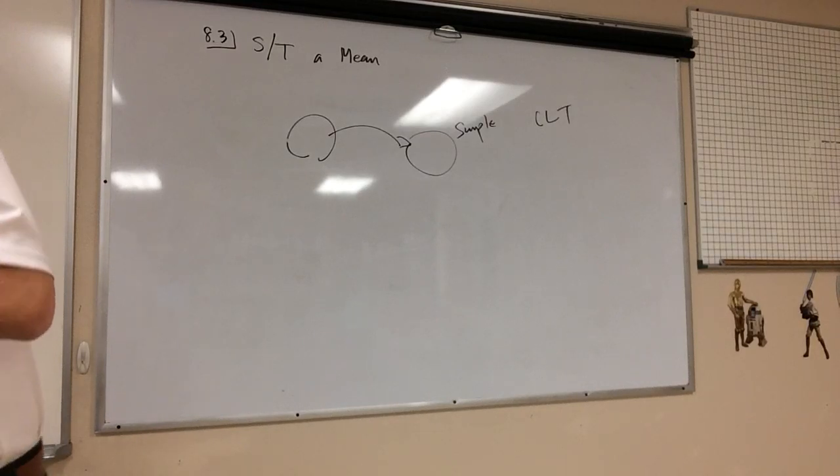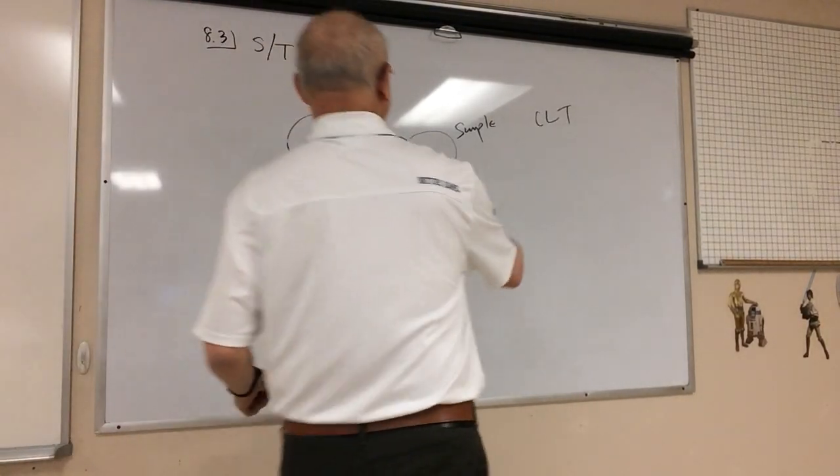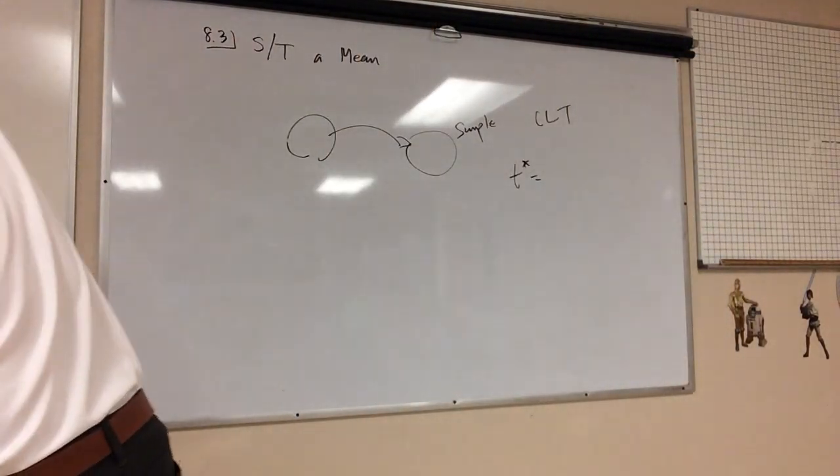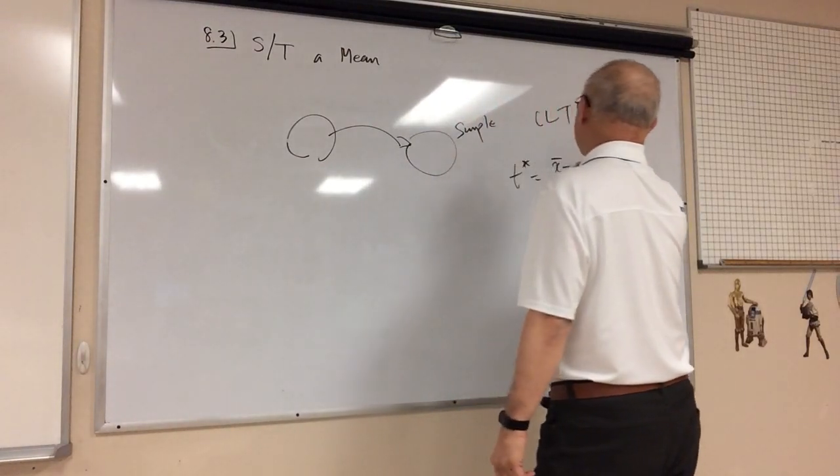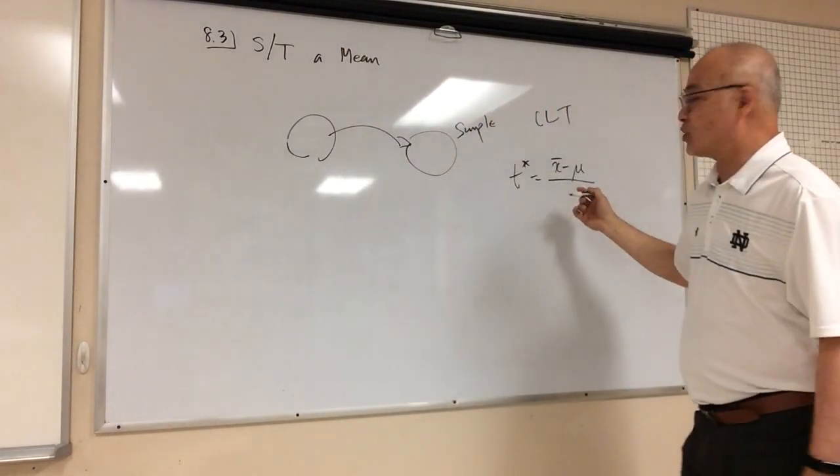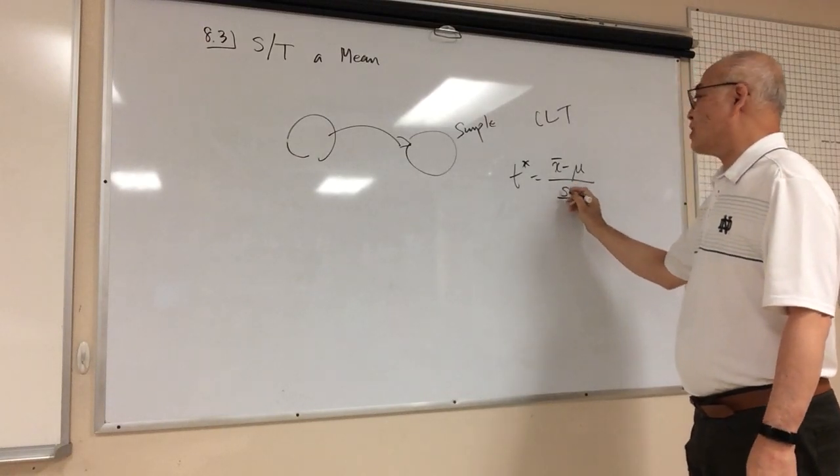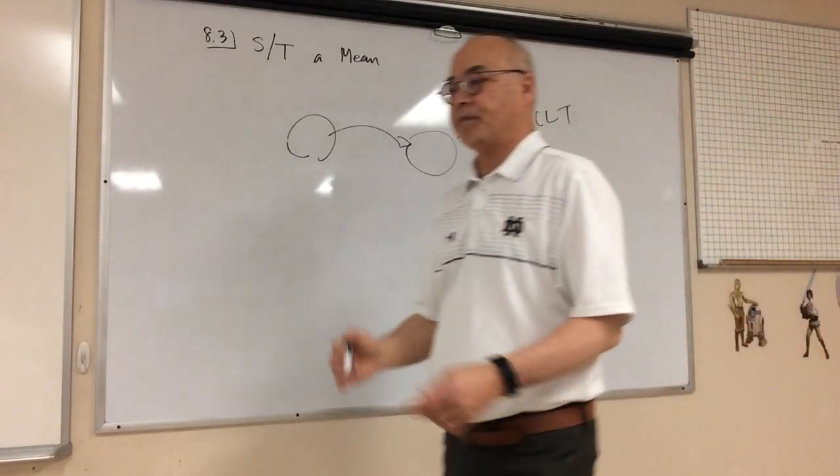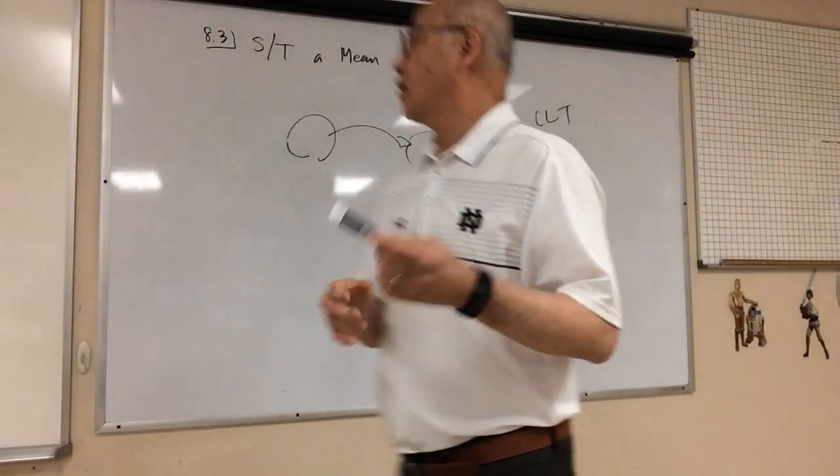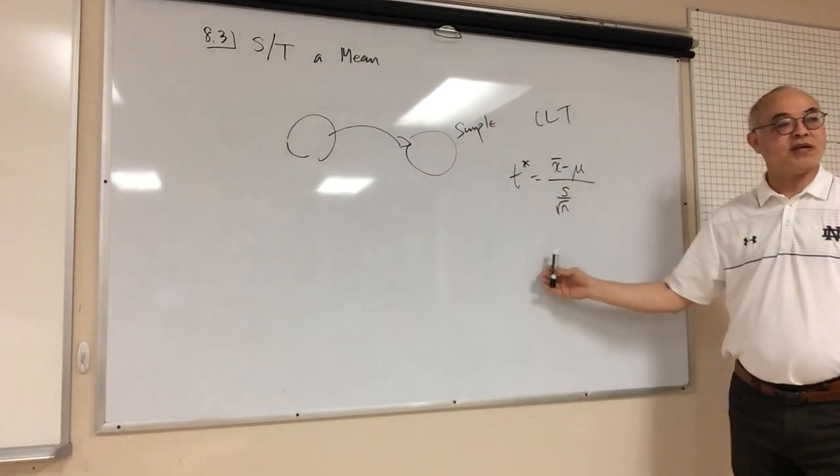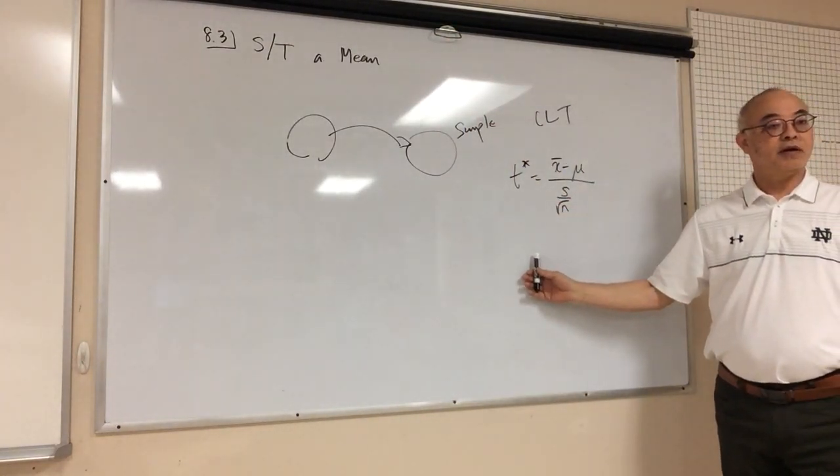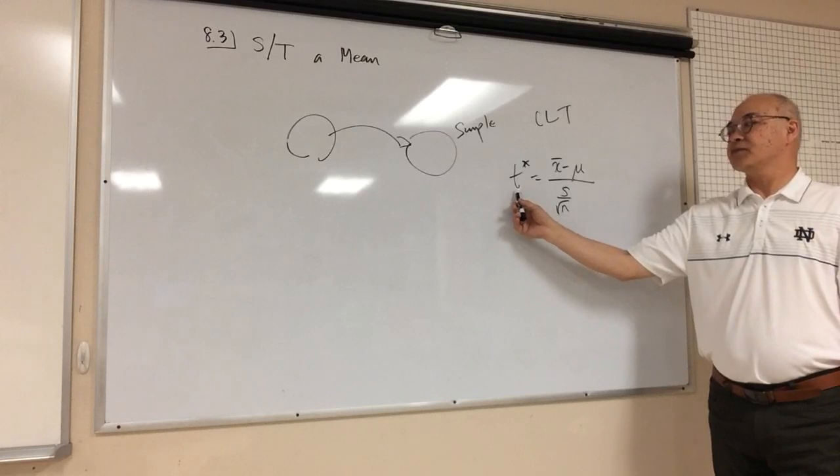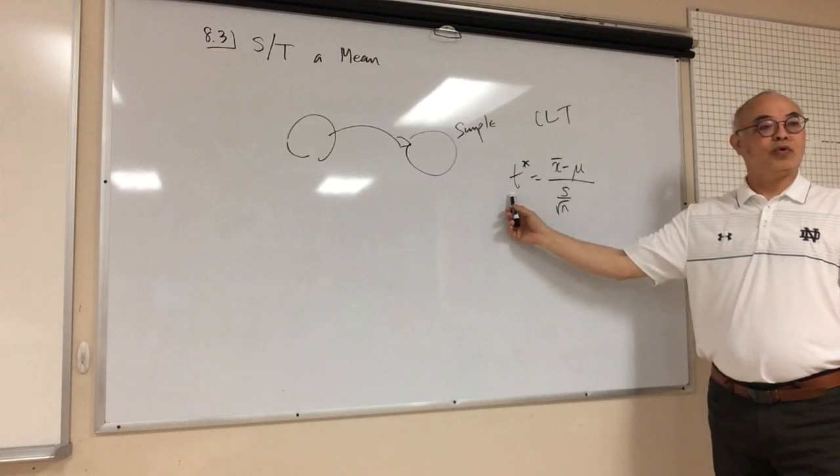So if you go to the bottom underneath here, we have a test statistic. The test statistic is equal to, what do we have? We have the sample mean minus the population mean, and then we're going to use the standard deviation of the sample divided by square root of n. This is our t-statistic. Remember we used the z when we were doing the proportions, right? For the mean, we're going to use this.